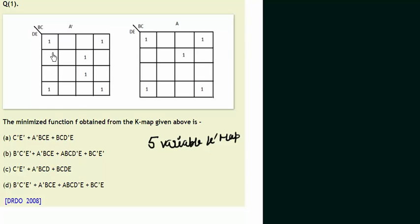So let's see how we can do the grouping. This one and this, this, this - the 4 corner ones in this first map and also these 4 cornered ones in this second map. In total, these 8 ones can be grouped.